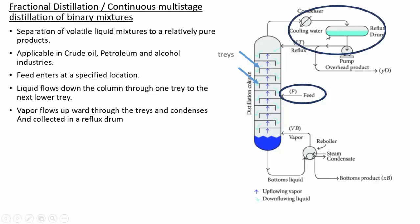The vapor rises through the trays and reaches a condenser at the top, where it is condensed and collected in a reflux drum. Some of the liquid is returned back to the column as reflux. There is liquid flowing down from the top and vapor rising from the bottom simultaneously. Some portion is reflected back to the feed and some is collected as product. This vapor contains more of component A, the more volatile component, and less of B.